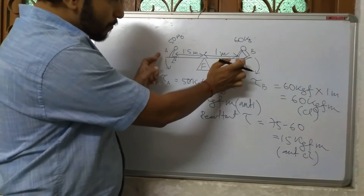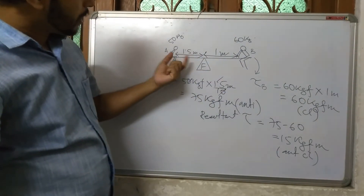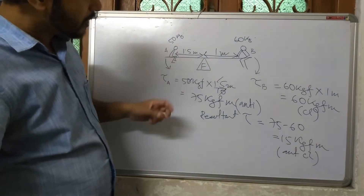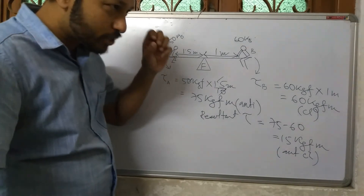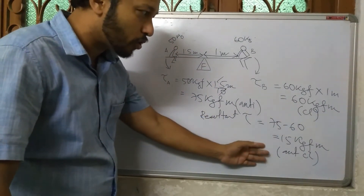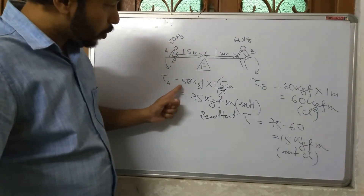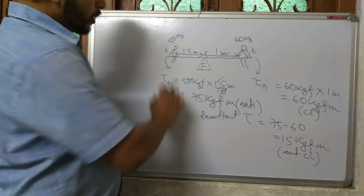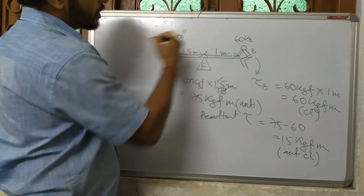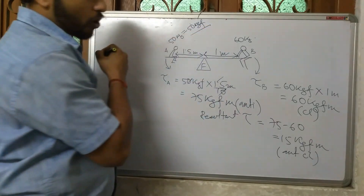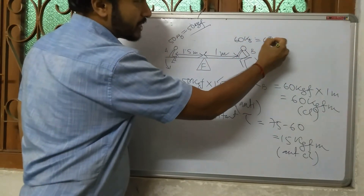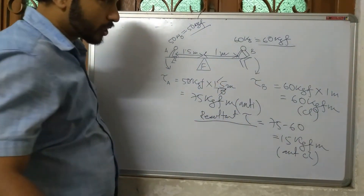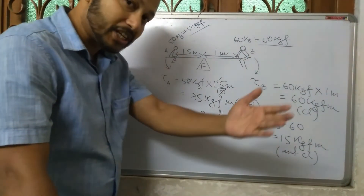So for this type of numerical, where two boys are sitting and their masses and distances from the fulcrum are given, we can calculate the anticlockwise torque, the clockwise torque, and the resultant torque. The formula is simply weight multiplied by distance. Mass in kg is converted to weight in kgf, then multiplied by the distance. We will go through a few more examples in our next session. Thank you.